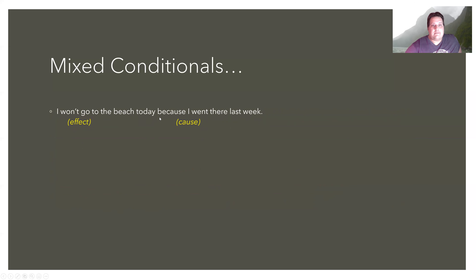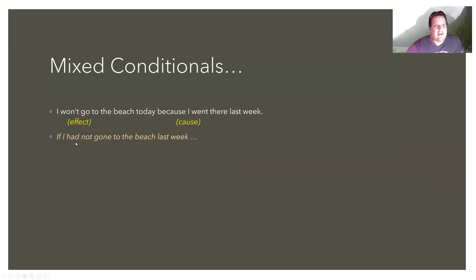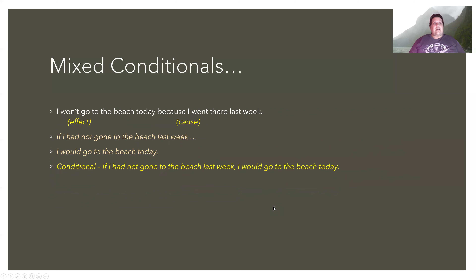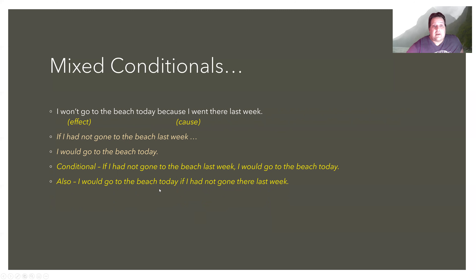'I won't go to the beach today because I went there last week.' The cause is simple past and positive, so the conditional becomes past perfect and negative: 'If I had not gone to the beach last week.' The effect is simple future and negative, so we get rid of the negative and use the second conditional result clause: 'I would go to the beach today.' The full conditional: 'If I had not gone to the beach last week, I would go to the beach today.' We can also switch the order: 'I would go to the beach today if I had not gone there last week.'